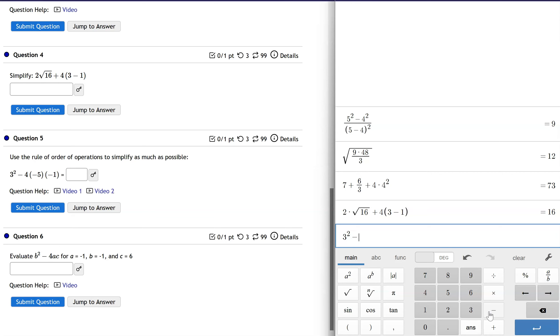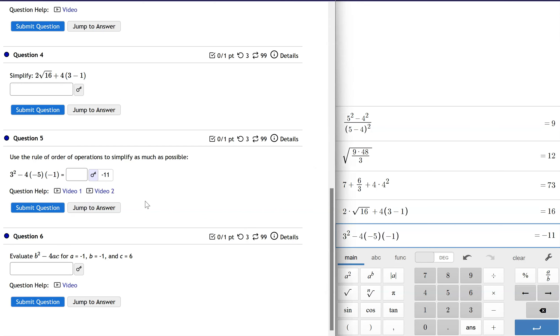So I have my 3 squared, and I'm going to go minus 4, and I'm going to go parentheses, minus 5, parentheses, oops, okay, parentheses, negative 1. So all using that subtraction symbol there. And now we're getting a negative 11 out, which matches perfectly.